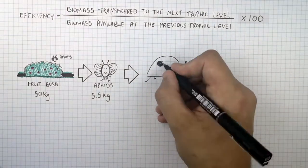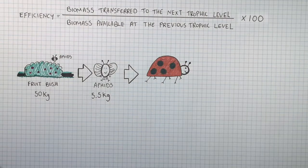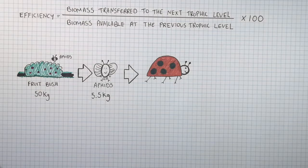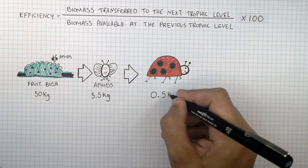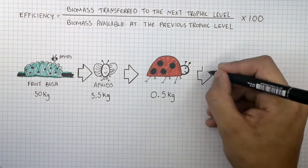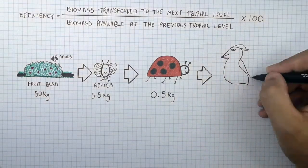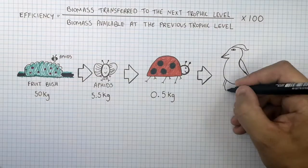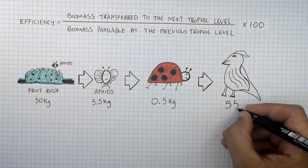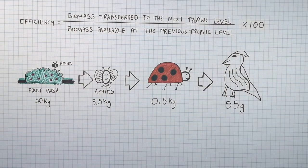Ladybirds eat the aphids, so 5.5 kilograms of biomass of aphids is transferred to 0.5 kilograms of biomass of ladybirds. That 0.5 kilograms of biomass of ladybirds is then transferred to 55 grams of biomass stored in the birds.